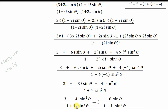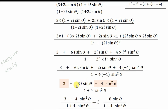We can now split into real and imaginary parts. The real part is (3 − 4sin²θ) / (1 + 4sin²θ), and the imaginary part is 8sinθ / (1 + 4sin²θ).